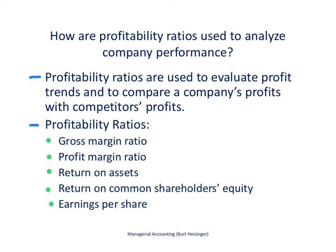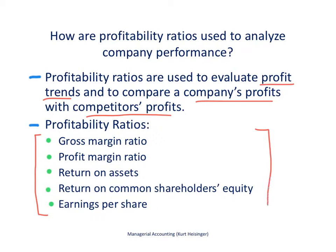Profitability ratios are used to evaluate profit trends over a period of time, maybe from one year to the next over the course of three, four, or five years for one company, and to compare a company's profits to competitors' profits. We're going to be looking at five different profitability ratios: the gross margin ratio, profit margin ratio, return on assets, return on common shareholders equity, and earnings per share.